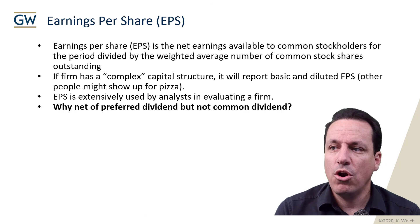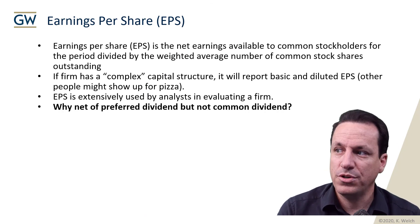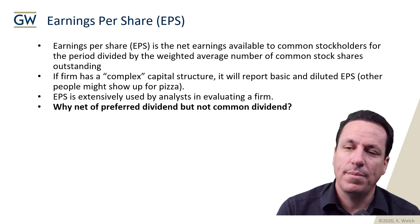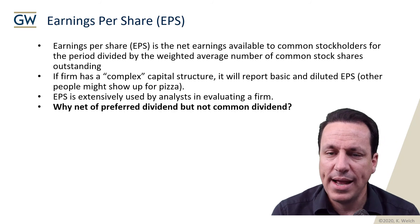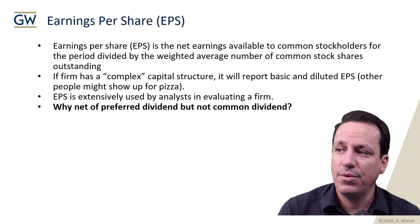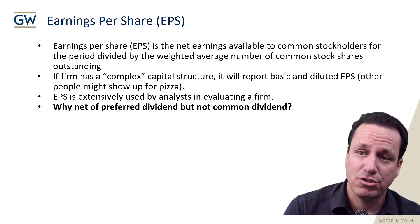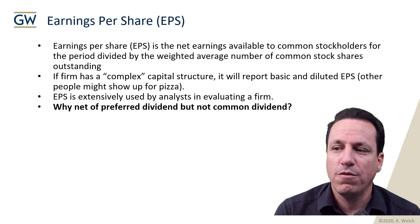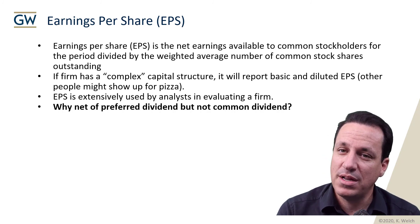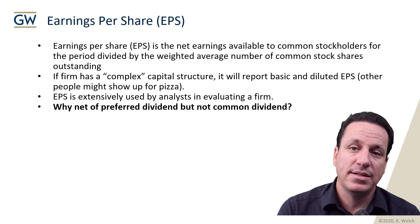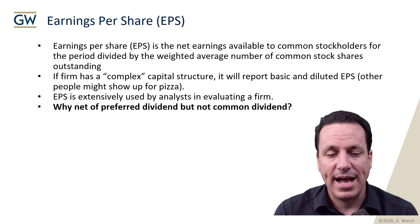Earnings per share is the net earnings available to common stockholders — not preferred, common stockholders — for the period, divided by the weighted average number of common shares outstanding. If a firm has a complex capital structure, which many do, it will report both basic and diluted EPS, factoring in all these other elements like people showing up and extra people around. Earnings per share is extensively used by analysts in valuing firms.